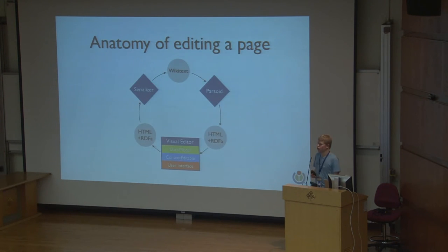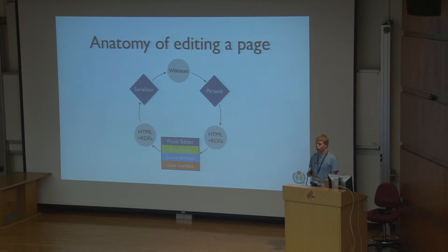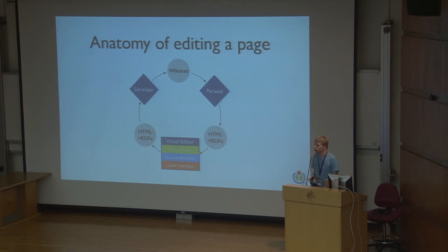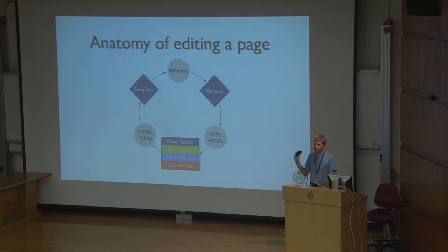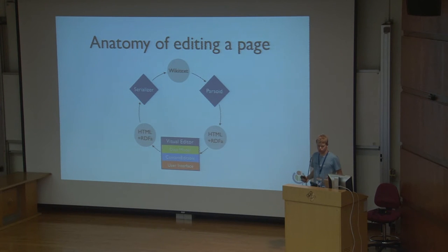So when you edit a page in Visual Editor, we take the Wikitext in the page and run it through Parsoid, which converts it to HTML. Usually that conversion is cached because we build a parsing cache fairly aggressively. The HTML is then loaded into Visual Editor, which being an HTML editor does its thing, messes with it, and spits HTML back out. That HTML goes to the second component of Parsoid called the Serializer, which takes HTML and turns it back into Wikitext, and then saves it to the page.